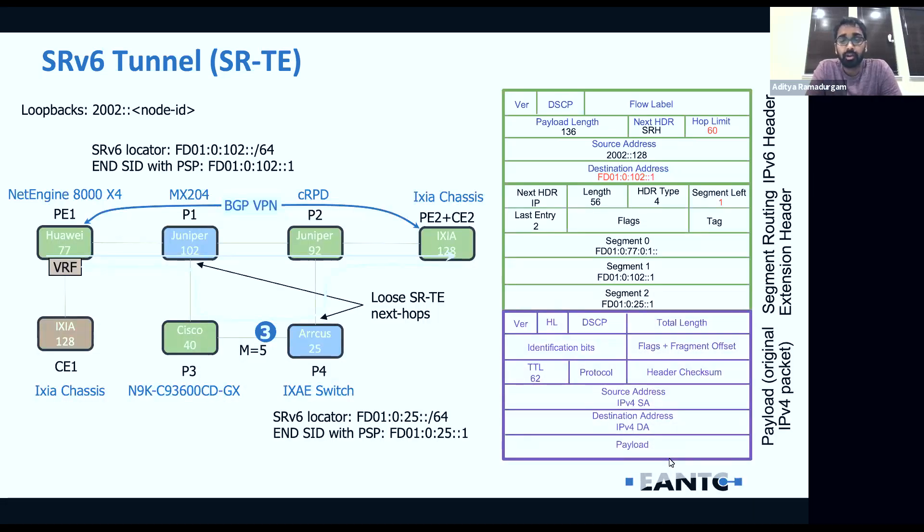Once this new packet is constructed, the hop limit is decremented and all of that, an IPv6 route lookup is performed. Based on the SPF, the next hop address is directly reachable via the Cisco 40, according to the SPF. The packet is being sent to Cisco 40 box. As we can see on the next slide, Cisco 40 doesn't perform any end-SID functionality. It just looks at it as an IPv6 header. It performs a route lookup in the IPv6 routing table and then forwards the packet to Juniper 102.